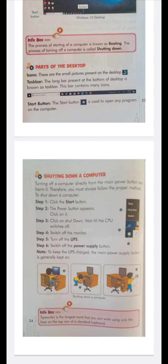In these pictures you can see the rules for shutting down a computer. In the picture there is a Start button — you will click on it. Then the power button appears — click on the power button. Then click Shut Down. Then you will switch off the monitor, then switch off the UPS, and then switch off the power supply button.